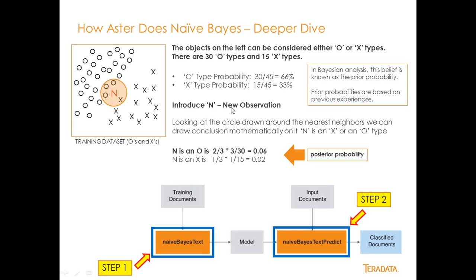We introduce N as a new observation and look at its nearest neighbors. N is an O: it's two-thirds times three out of 30, giving 0.06. N is an X: it's one-third times one out of 15, giving 0.02, since X only has one nearest neighbor relationship to N. So from posterior probability we can say N is probably an O.